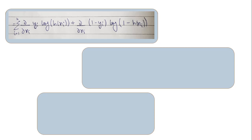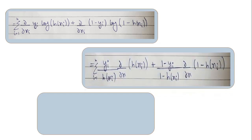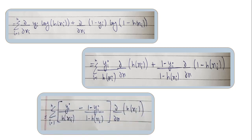In the first term we apply the derivative of log(x), which is 1/x, giving y_i / h(x_i) multiplied by the derivative of h(x_i) using the chain rule. For the second term, we again apply the log derivation and get (1 - y_i) / (1 - h(x_i)). Taking the derivative of h(x_i) as common, and noting that the derivative of (1 - h(x_i)) gives -h'(x_i), we still need to find the derivative of h(x_i).